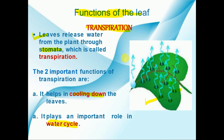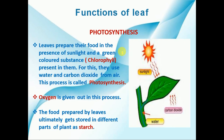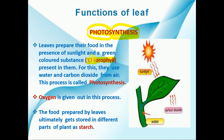Now we will understand the second important function of the leaf, that is photosynthesis. Photosynthesis means preparing food in the presence of light — 'photo' means light and 'synthesis' means to prepare. In the presence of light, plants prepare their food, and this process is known as photosynthesis. In this process, leaves prepare their food in the presence of sunlight and a green colored substance known as chlorophyll. Most leaves are green in color because of the presence of this pigment called chlorophyll.